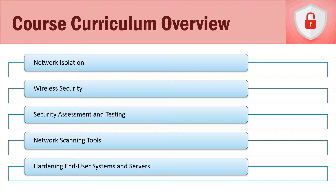In section thirteen, we talk about security assessment and testing, which relates to vulnerability assessments, penetration testing, and auditing. We cover frameworks to give you an understanding of how penetration testers and ethical hackers perform security assessments on networks and IT infrastructures. Section fourteen features live demonstrations — we look at common network scanning tools such as Wireshark, NMAP, and Nessus. Section fifteen covers hardening end user systems and servers, focusing on ways to lock down and make them more secure.